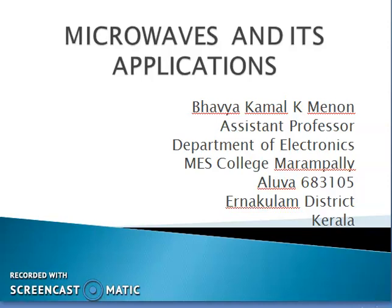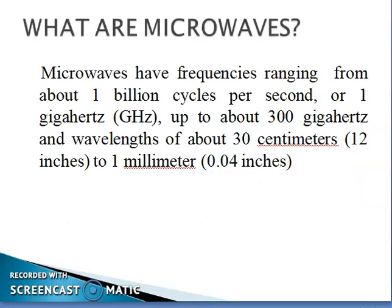What is a microwave? As we all know, the waves belong to the electromagnetic spectrum. Microwaves are the waves which have frequencies ranging from 1 gigahertz to 300 gigahertz and a wavelength of about 30 centimeters to 1 millimeter.